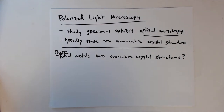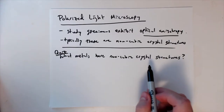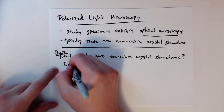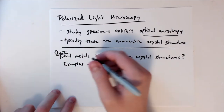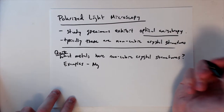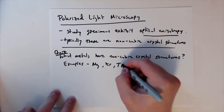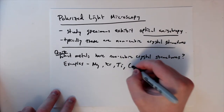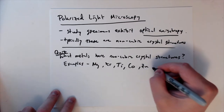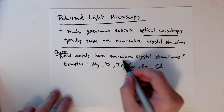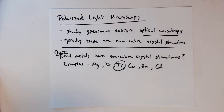Now that you're back, let's look at some examples of metals with non-cubic structures. Some common ones include: Magnesium (Mg), Zirconium (Zr), Titanium (Ti), Cobalt (Co), Zinc, and Cadmium. One of the biggest and most common is probably titanium — it's definitely one of the most common non-cubic metals we see.